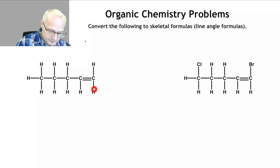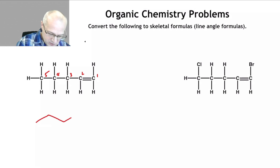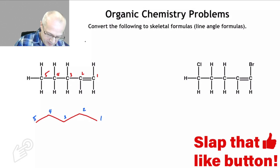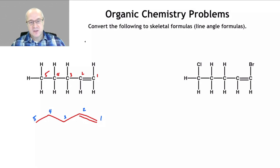All right, let's do this one. Let's count and number the atoms: one, two, three, four, five. So let's draw the zigzag — one, two, three, four, five. I know that between carbon one and two there's a double bond, so put it there. And there you go — that's the correct answer.